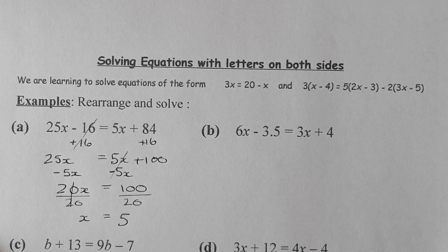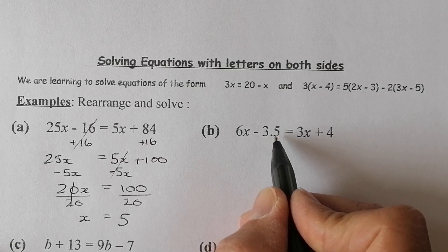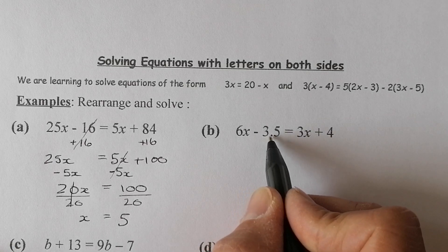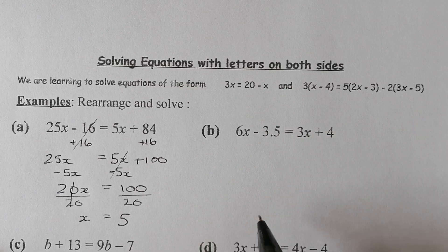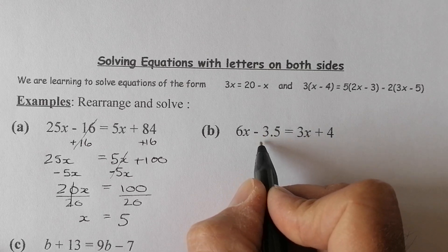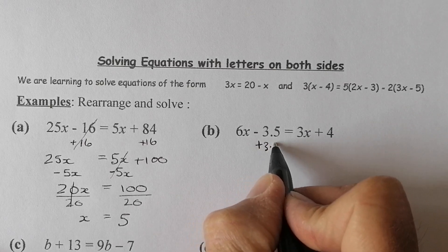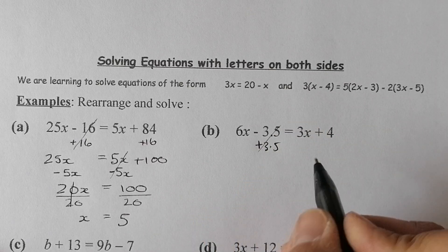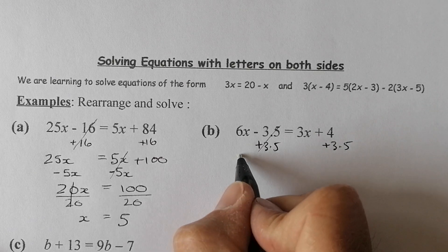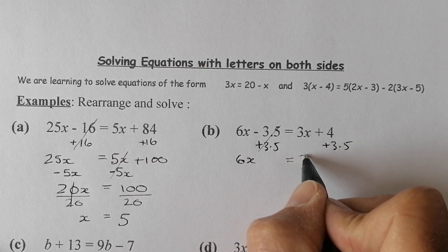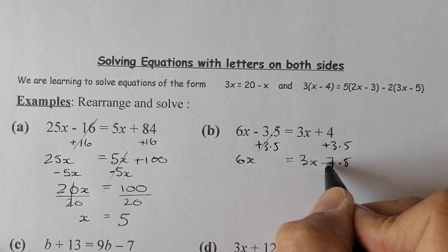On the next question, I'm going to get rid of that 3.5 that's sitting there, and then also the 3x — I could do them in one move, but I'll do them in two separate moves. I subtract 3.5, so I add on 3.5 to cancel it out, making 0. I add 3.5 to the right-hand side as well, leaving 6x equals 3x plus 7.5.